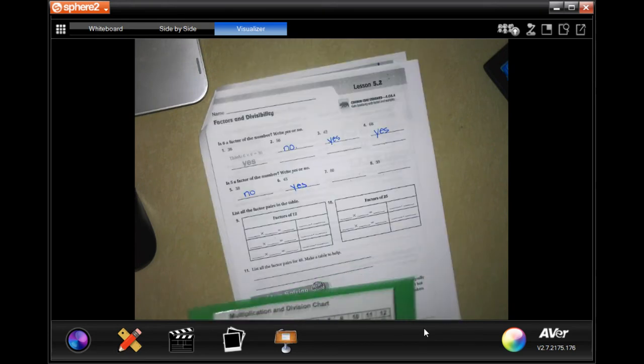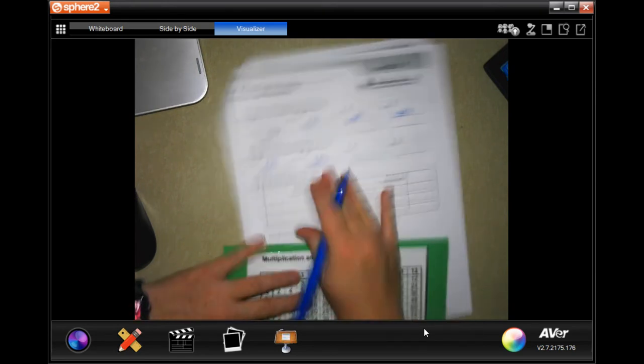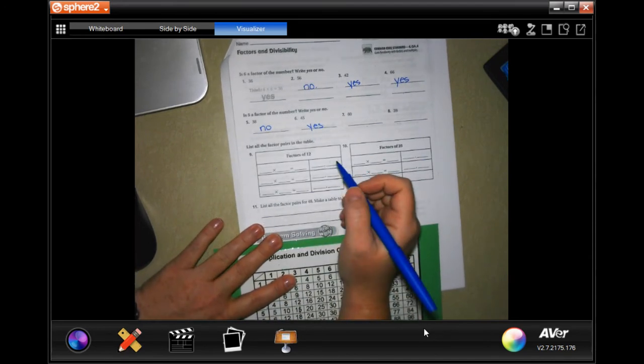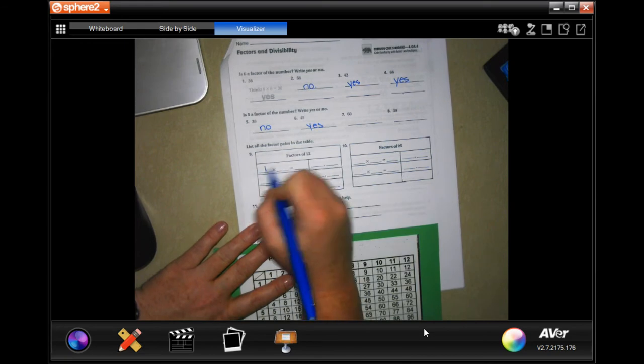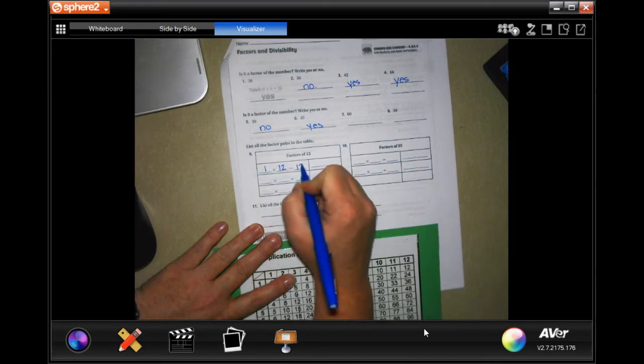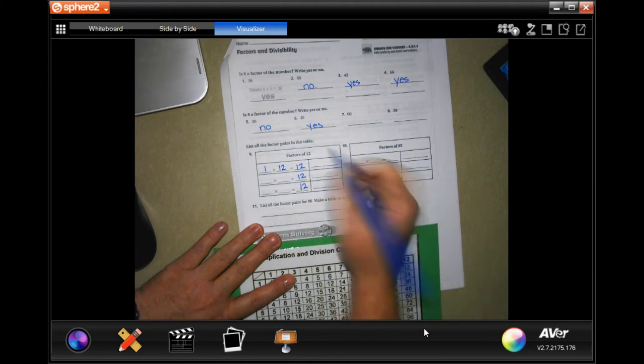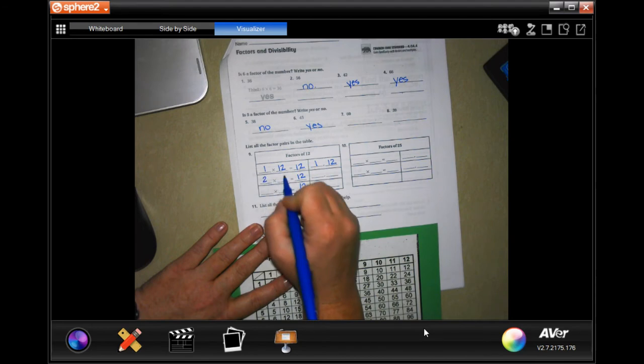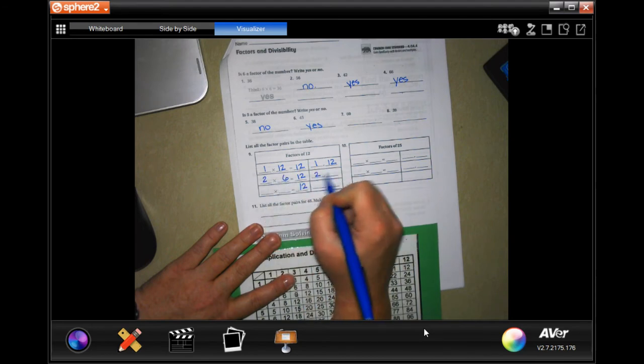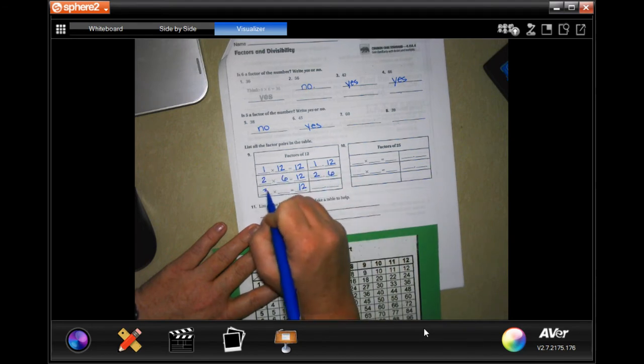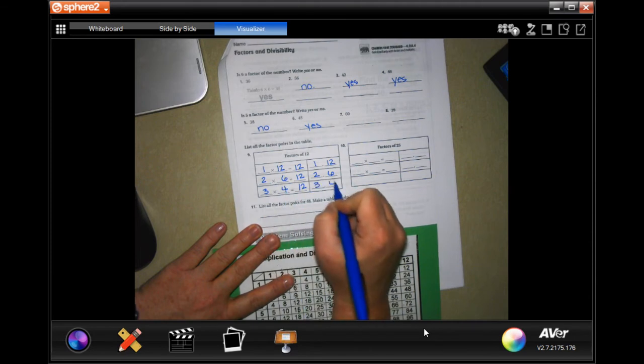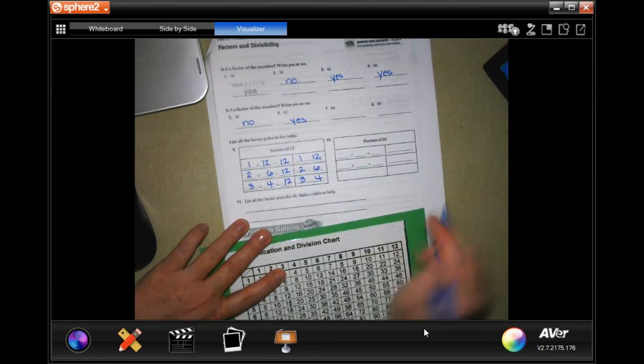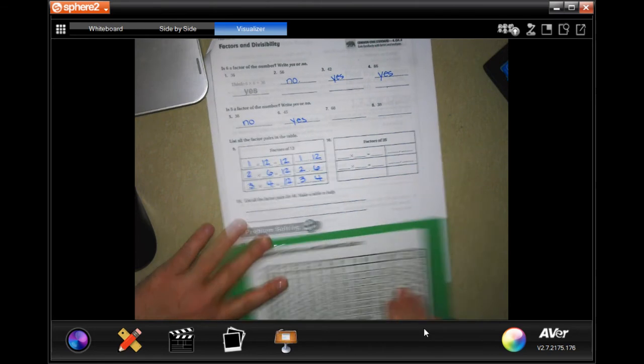All right, so number nine wants us to list the factors of 12. So, we can do one times 12, right? All of these should end up being 12. So, one and 12. Two times six and three and four. That's it, guys. You guys do 25, you totally can.